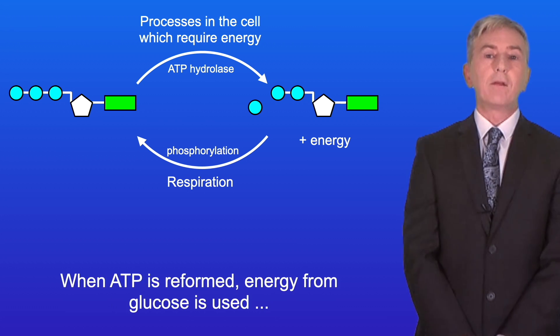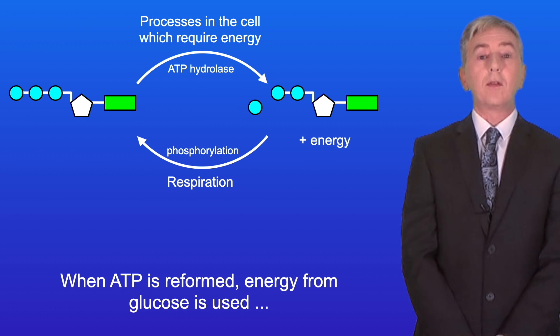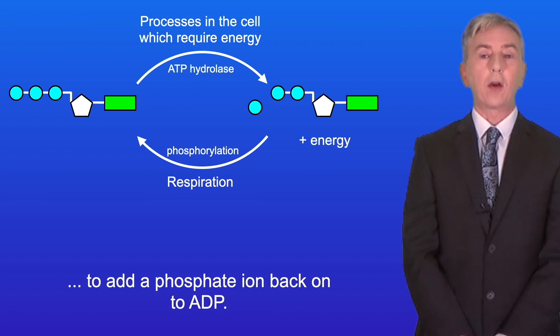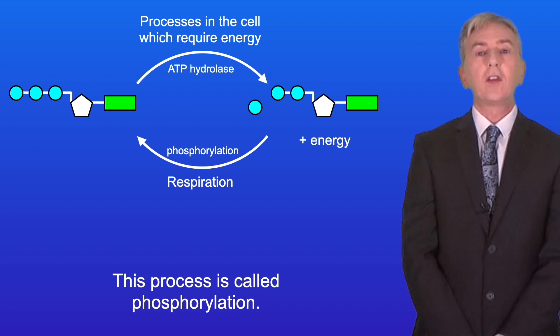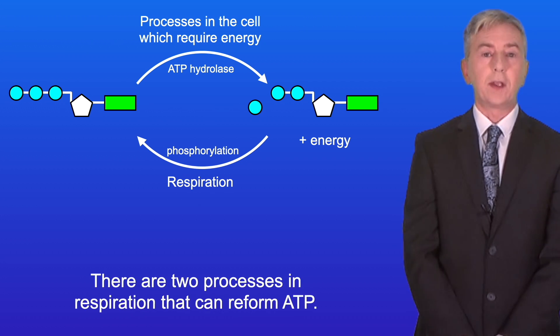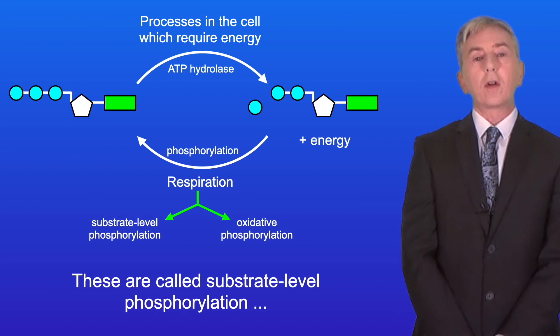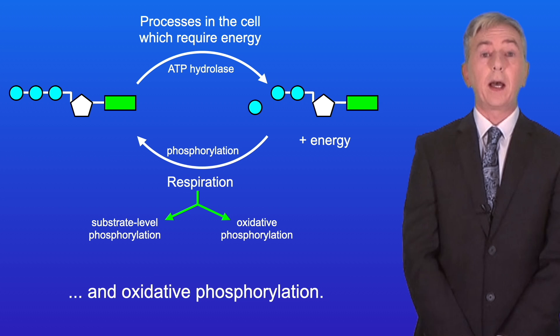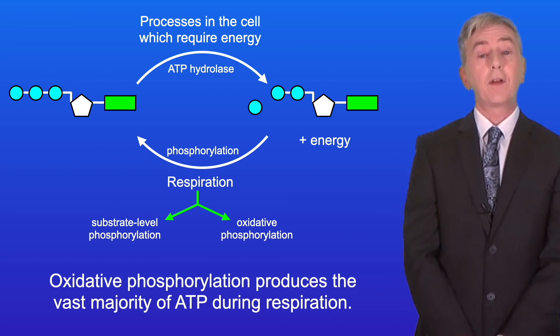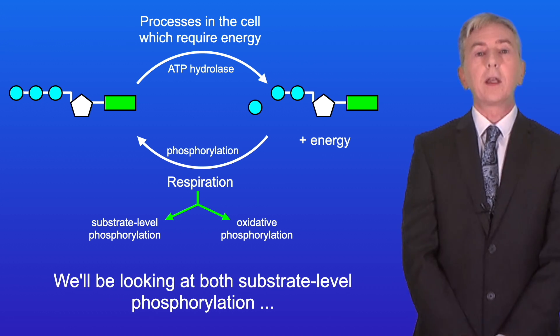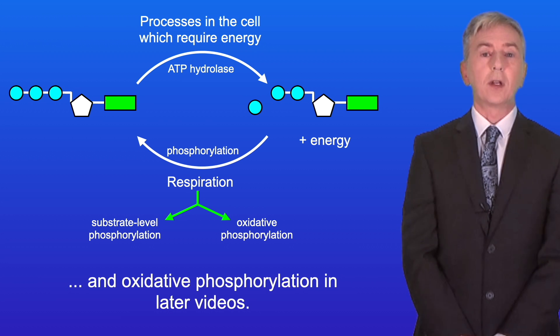When ATP is reformed, energy from glucose is used to add a phosphate ion back onto ADP. This process is called phosphorylation. Now there are two processes in respiration that can reform ATP. These are called substrate level phosphorylation and oxidative phosphorylation. Oxidative phosphorylation produces the vast majority of ATP during respiration. We'll be looking at both substrate level phosphorylation and oxidative phosphorylation in later videos.